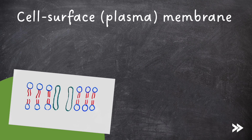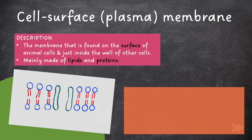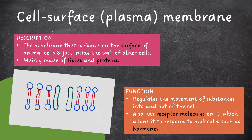Let's have a look at the organelles we need to know about, starting with the cell surface membrane. This is the membrane that is found on the surface of animal cells, and just inside the wall of other cells. It is mainly made of lipids and proteins. The cell surface membrane regulates the movement of substances into and out of the cell. It also has receptor molecules on it, which allows it to respond to molecules such as hormones.